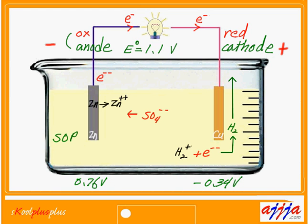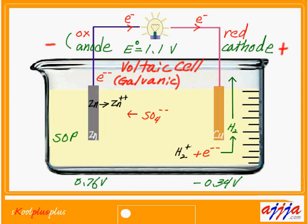Back to this — we call this one cell, like a battery. We call it a voltaic cell. Also, a galvanic cell, because we follow the name of this inventor, which is galvanic.